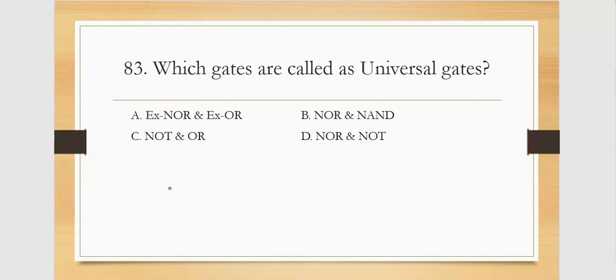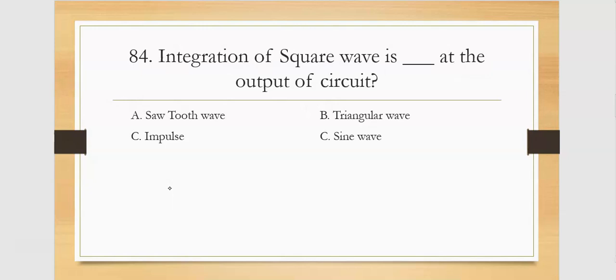Which gates are called universal gates? NOR as well as NAND gates are called universal gates. Rest of the gates are normal gates. Next: integration of square wave. If input is square wave, the output will be triangular wave.